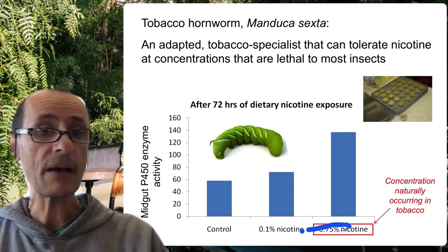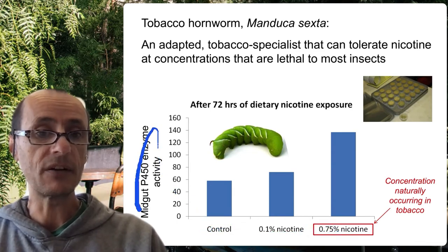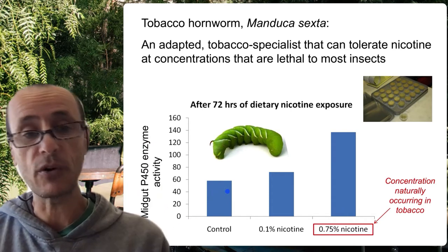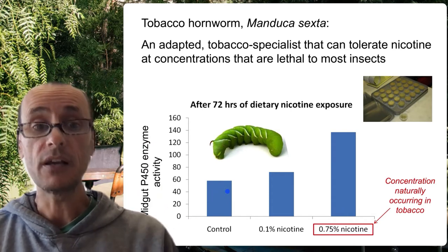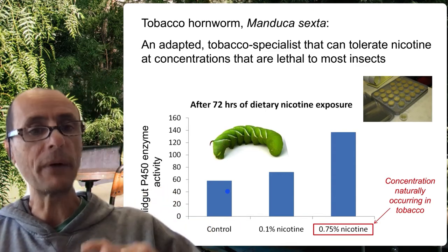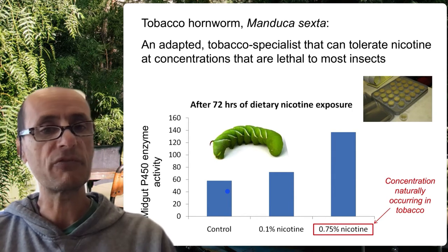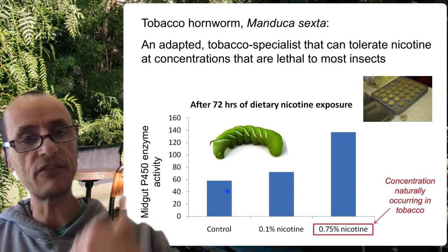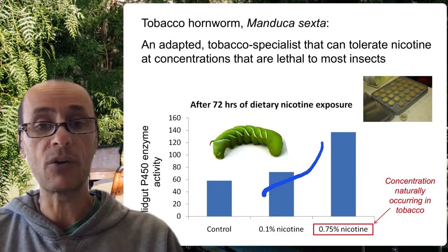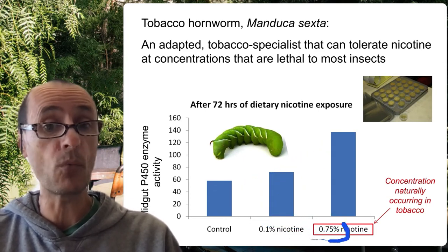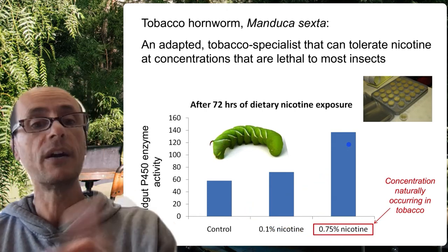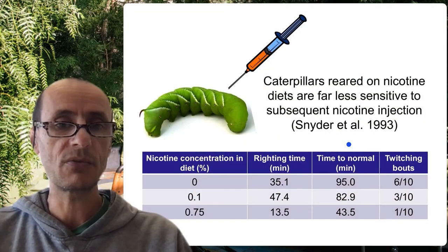Here's an example of cytochrome P450 activity that is sensitive to nicotine in the tobacco hornworm. The tobacco hornworm, as the name implies, can actually feed on tobacco, but it does so by upregulating these cytochrome P450s to get rid of the nicotine. Here you can see the upregulation is dose-dependent — the more nicotine you put in them, the more of these enzymes are produced, and therefore the more they're able to excrete it.